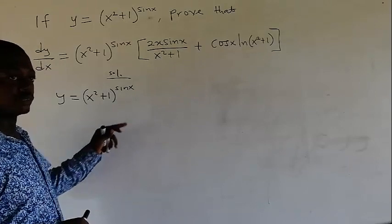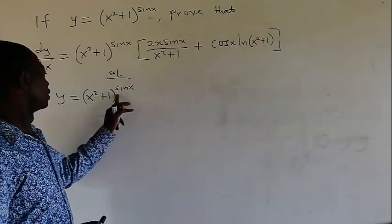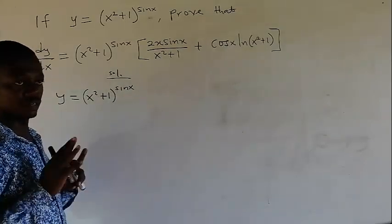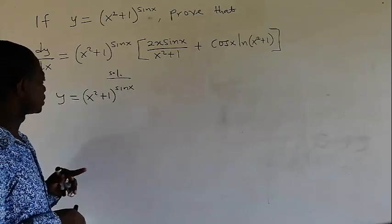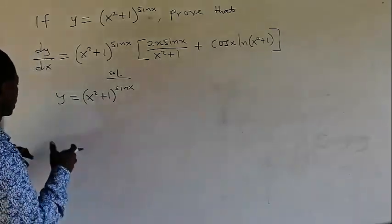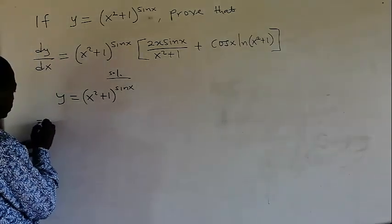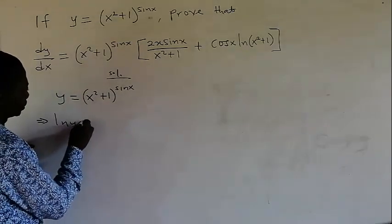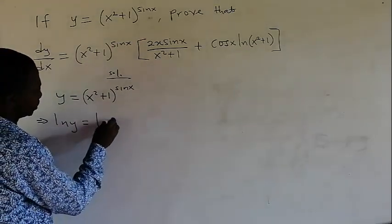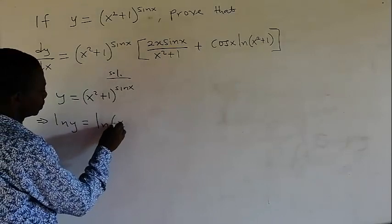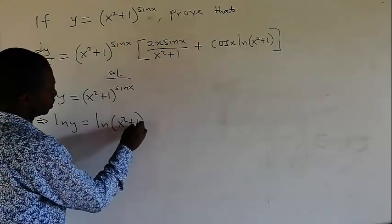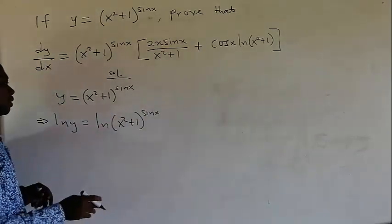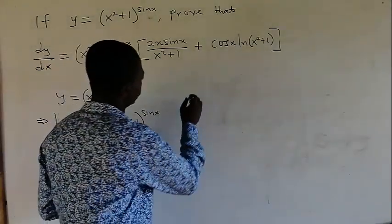So we are going to find the derivative of the main expression. First we move this power, and before we can do that, we have to take the natural log of both sides. So taking the natural log of both sides, we get ln y equals sin x times ln(x squared plus 1).